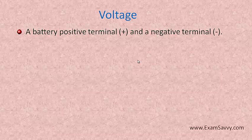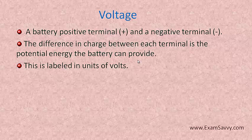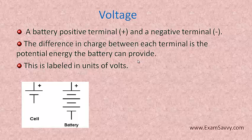What is meant by voltage? Voltage is defined as electric potential in the ratio of charge. We have a battery with a positive terminal and a negative terminal. When there is a difference in charge between each terminal, then it is called voltage — generally called electric potential. This will be labeled in units of volts. The unit of voltage is volt.